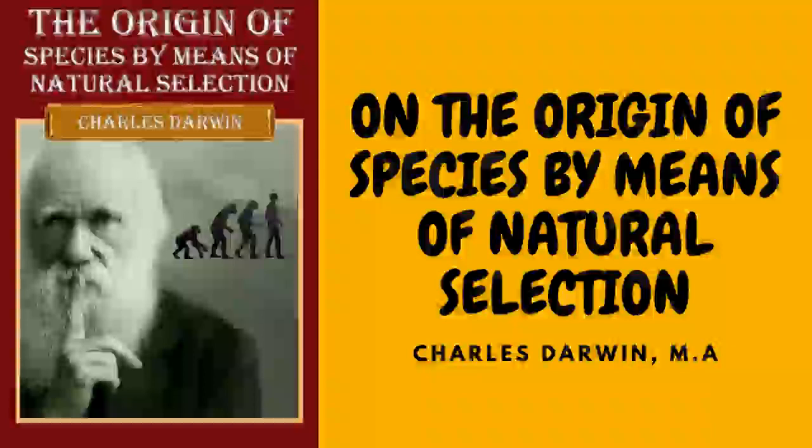This system appears to be far more susceptible than any other part of the organization to the action of any change in the conditions of life. Nothing is more easy than to tame an animal, and few things more difficult than to get it to breed freely under confinement. Even in the many cases when the male and female unite, how many animals there are which will not breed though living long under not very close confinement in their native country. This is generally attributed to vitiated instincts. But how many cultivated plants display the utmost vigor and yet rarely or never seed. In some few such cases it has been found out that very trifling changes, such as a little more or less water at some particular period of growth, will determine whether or not the plant sets a seed.